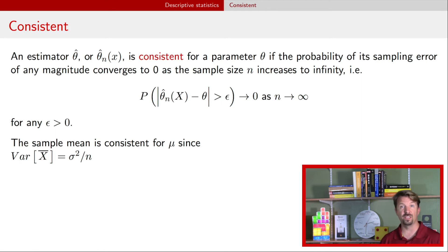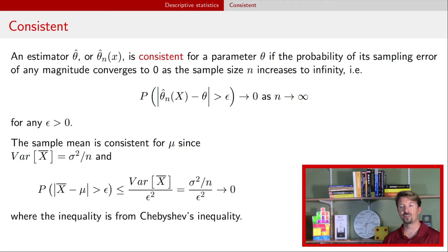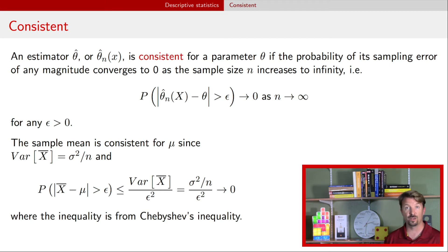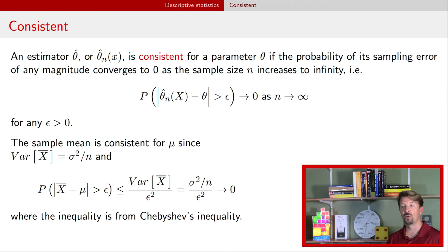As an example, we can look at the sample mean. We already derived the variance of the sample mean — it was sigma squared divided by n. It turns out you can write down the probability that the sample mean is too far away from the population mean mu using Chebyshev's inequality. What you find is that this probability is bounded by sigma squared over n divided by epsilon squared. Because n is going to infinity, this quantity goes to zero. Therefore, the probability goes to zero, and the sample mean is consistent for the population mean.